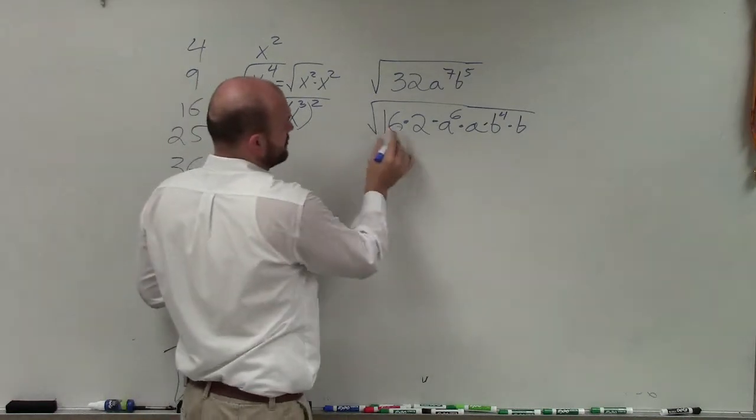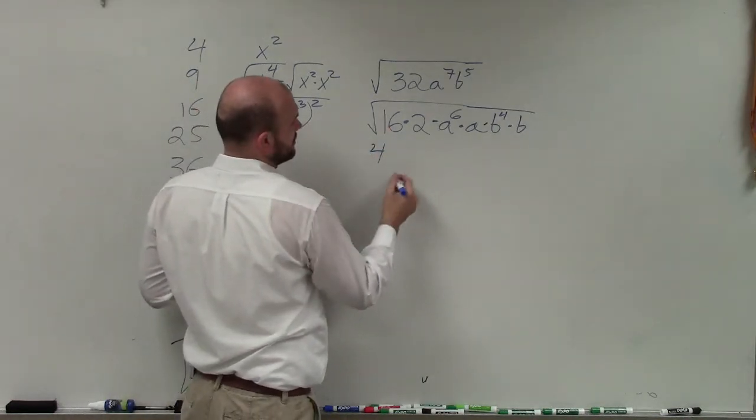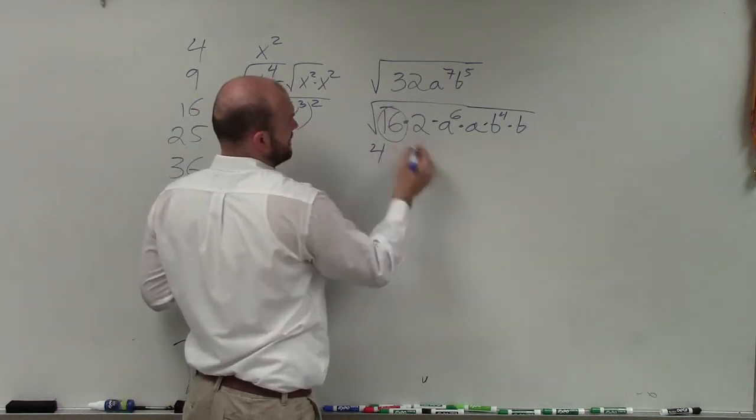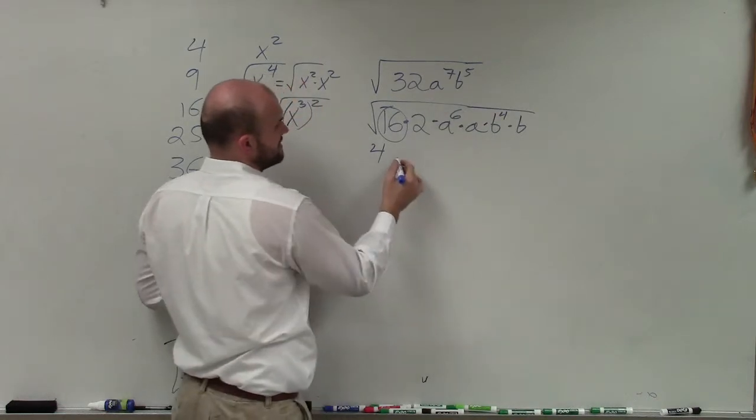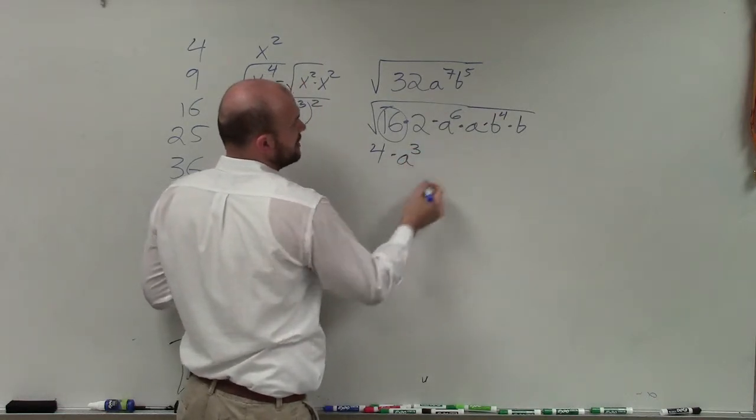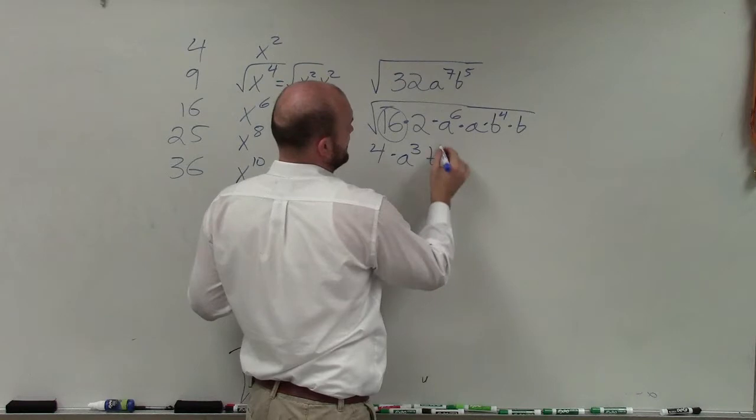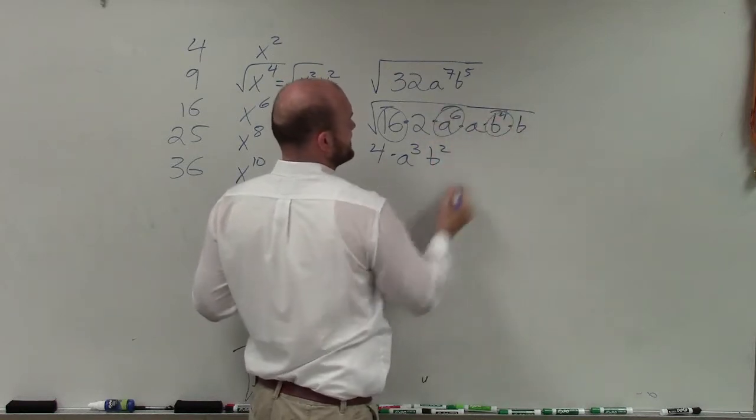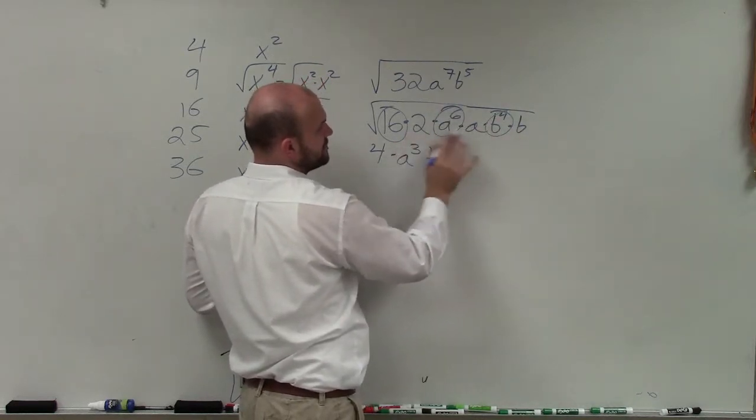Therefore, the square root of 16 is 4. The square root of a to the sixth is a cubed. The square root of b to the fourth is b squared. So I take those out, and now I'm just left with 2 times a times b.